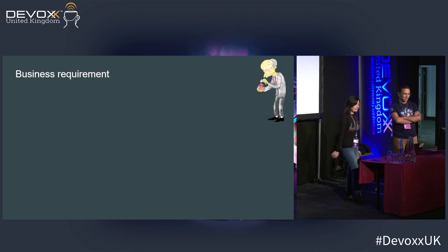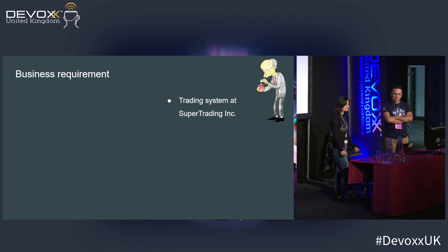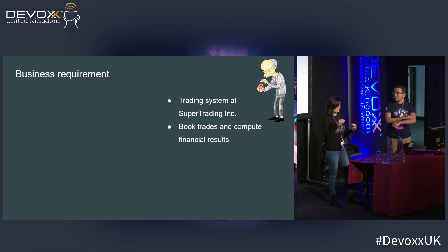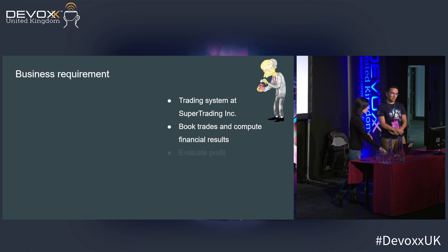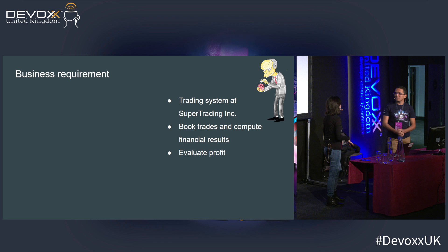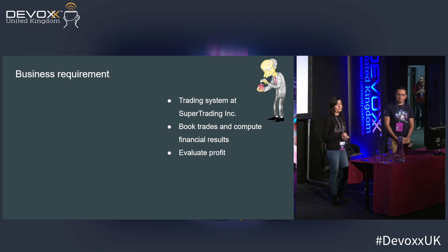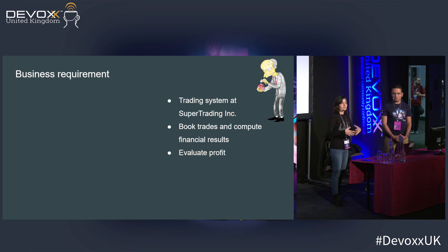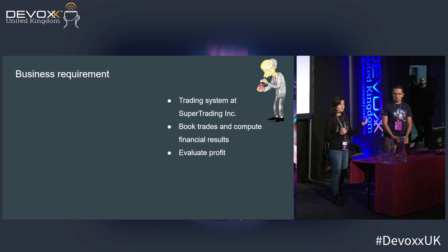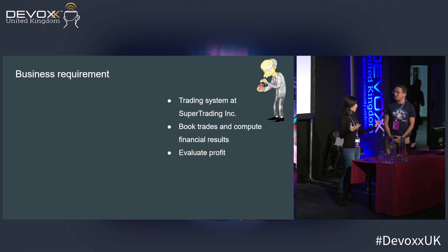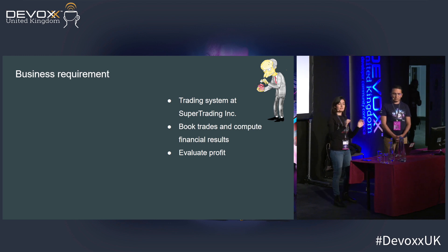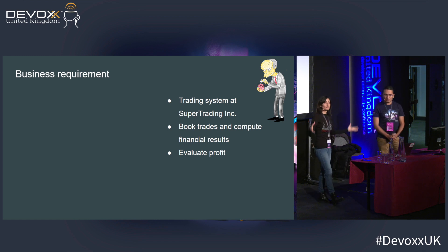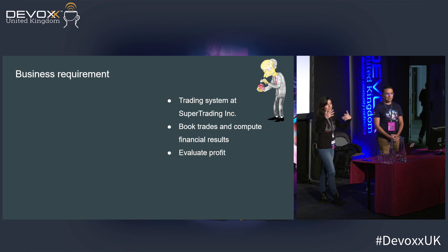The business requirements: as product manager of Super Trading Inc., our system allows traders to book trades and computes financial results, including something called profit. Don't worry about the financial details — just imagine it as a buy-sell transaction where important financial results need to be calculated to allow the trader to make decisions. Profit is basically telling the trader whether they're losing or gaining money today. The financial results are at the level of the trade, while profit is more global — am I positive, am I negative overall?